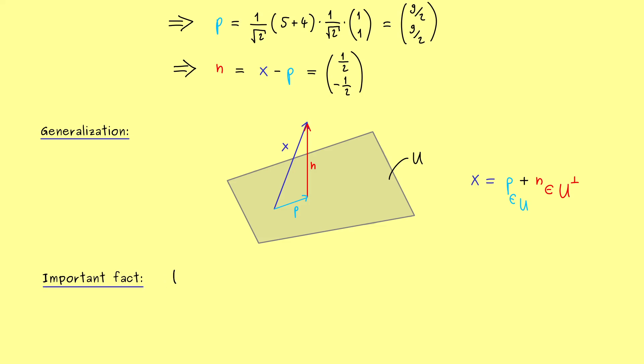In fact, also in this general setting, the orthogonal projection is uniquely given. Hence if we write x as p plus n, where p comes from the subspace u and n from the orthogonal complement of u, then we know there is no other decomposition for x in this way. Indeed, the proof we wrote down in the last video works exactly the same in this general case.